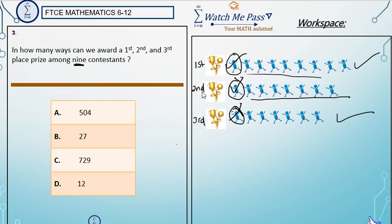So we had nine people in the beginning, and then somebody won. So that left eight people for the second prize, and somebody won. And that left seven people who could potentially win the third prize.